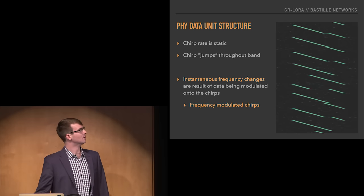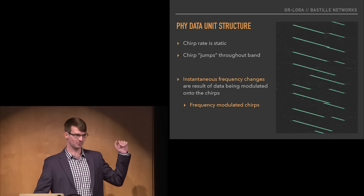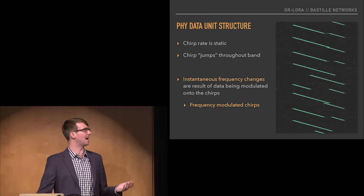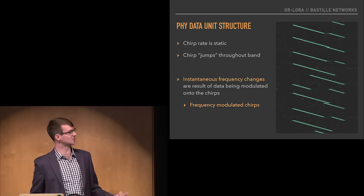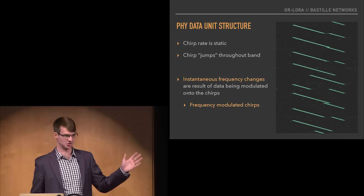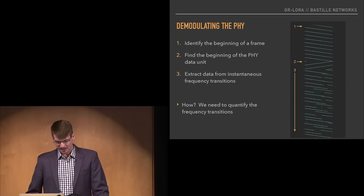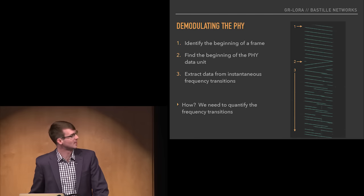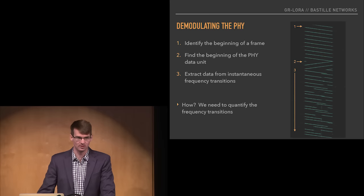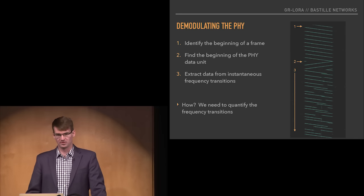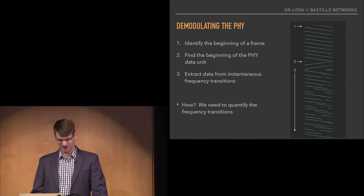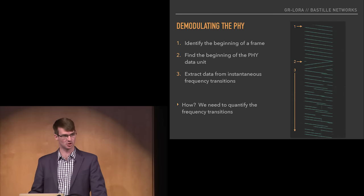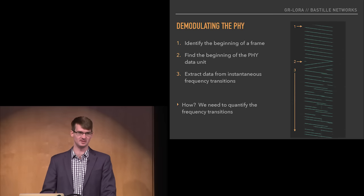Looking further at the PHY data unit, the chirp rate is static — the rate at which the chirp frequency changes is constant, or the first derivative of the frequency. However, the chirp will jump throughout the band instantaneously. The data is modulated onto the chirp by changing its position within the band instantaneously. We have three elements: preamble, start frame delimiter, and data segment. Step one is identifying the beginning of the frame. Once we have that, we synchronize using the start-of-frame delimiter downchirp symbols, and finally extract data from the frequency transitions in the payload section.